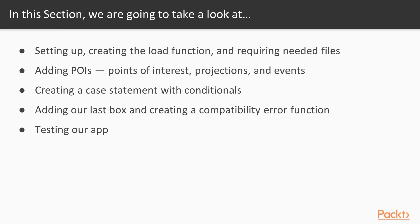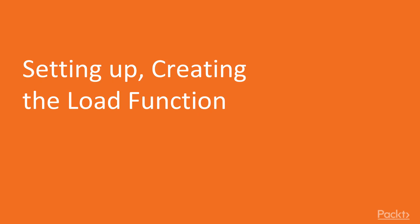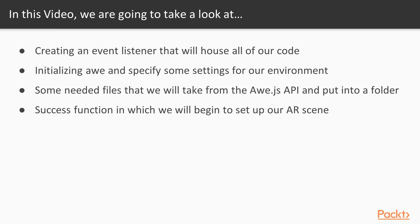Then we will be testing our application, and finally we will go into how to load a model into aw.js. In video one, we are going over setting up, creating the load function, and requiring the needed files. In this section, we are going to build a trick cube application. When the user clicks on a larger cube, a medium-sized cube will spring out of it, and clicking the medium cube will produce a smaller cube.